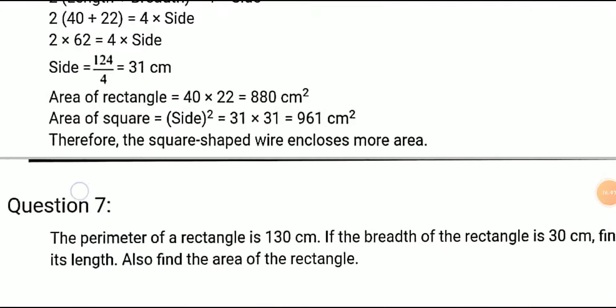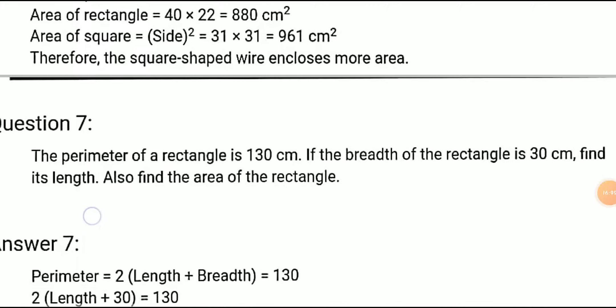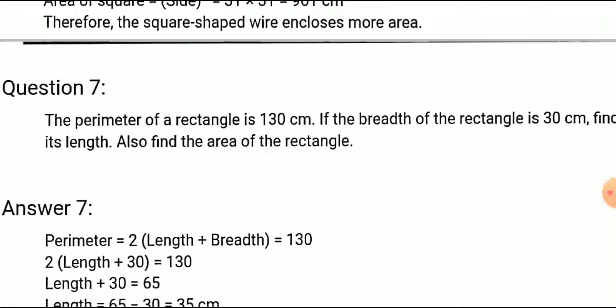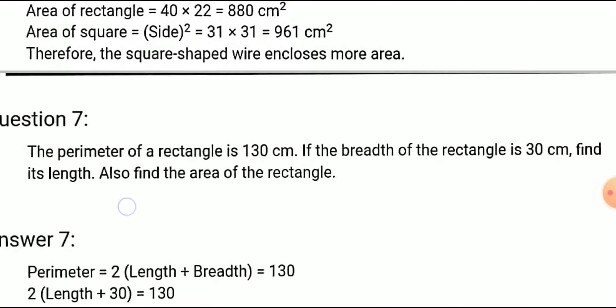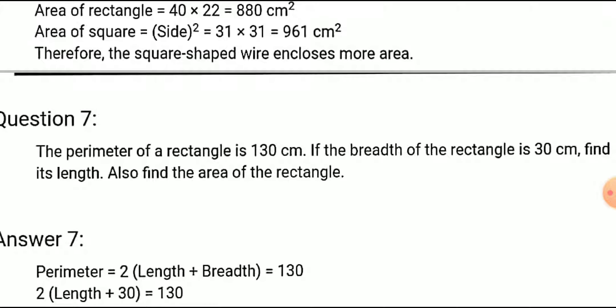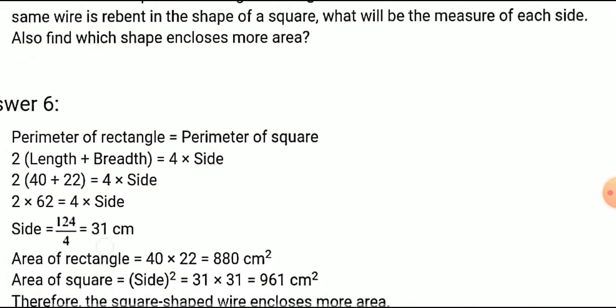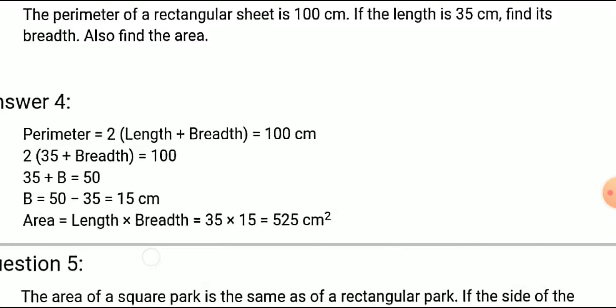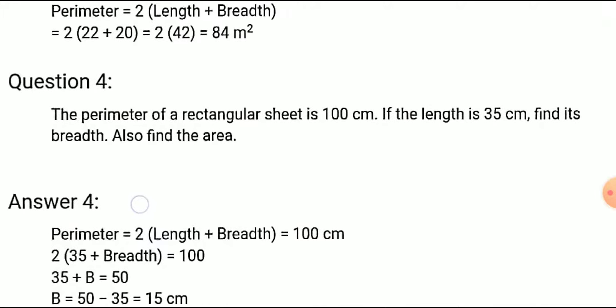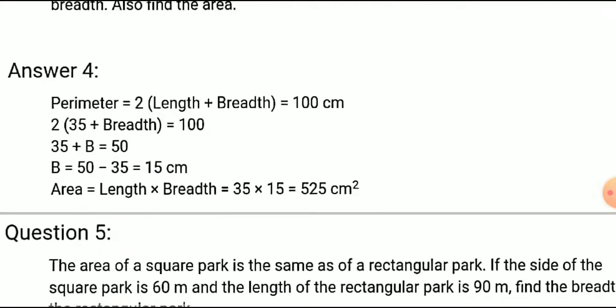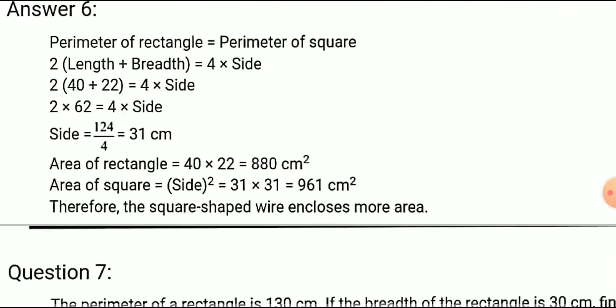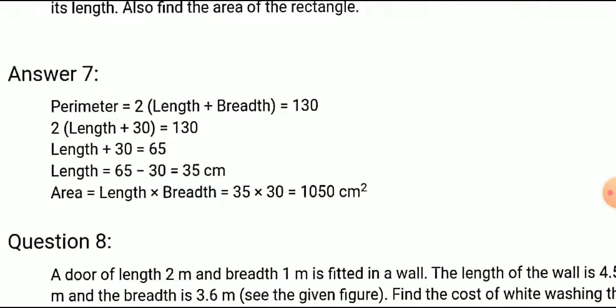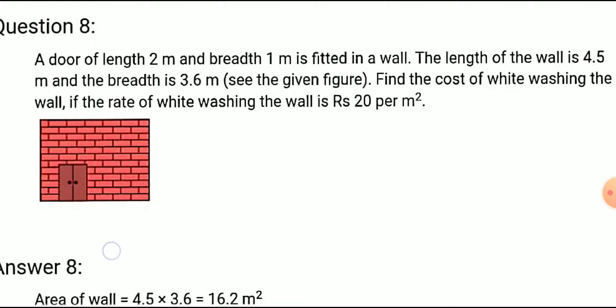Question number seven: the perimeter of a rectangle is 130 centimeters. If the breadth is 30 centimeters, find its length and also find the area of the rectangle. This kind of question I already solved above in question number four. You can use the same method to calculate this question by yourself. Now I am going to start question number eight.